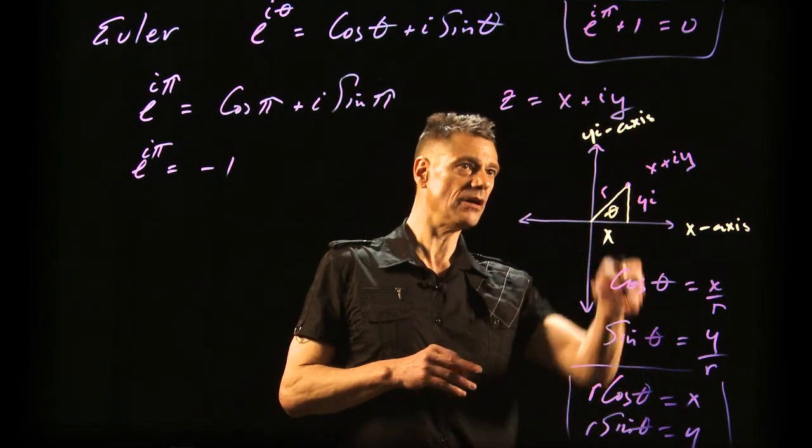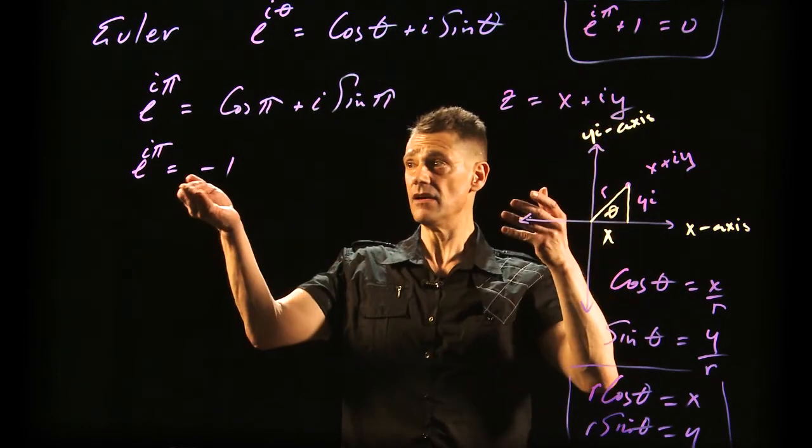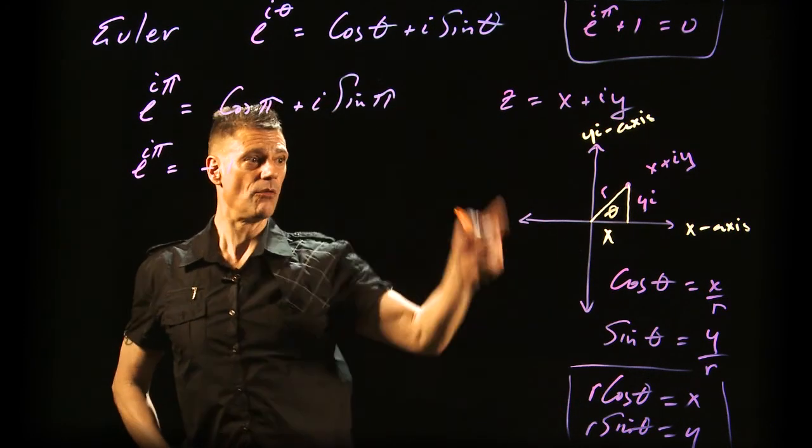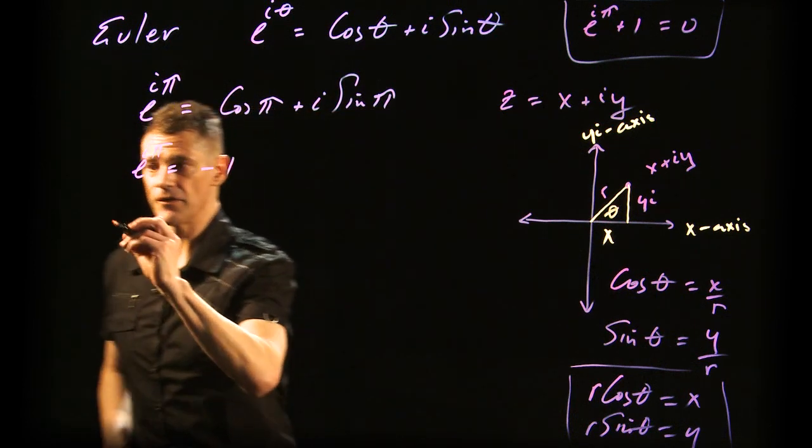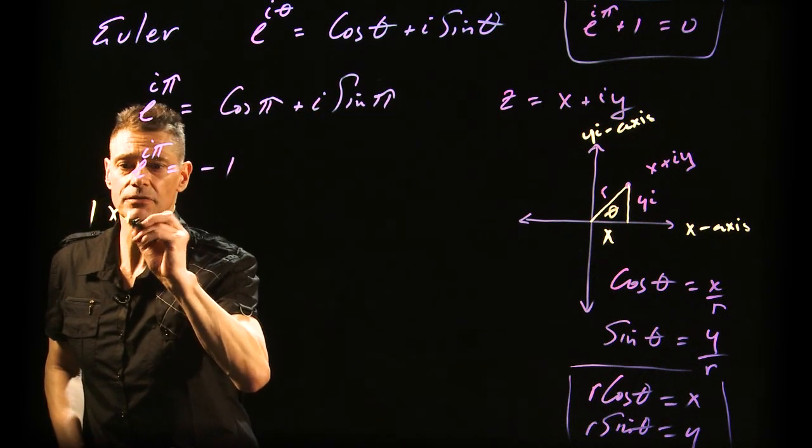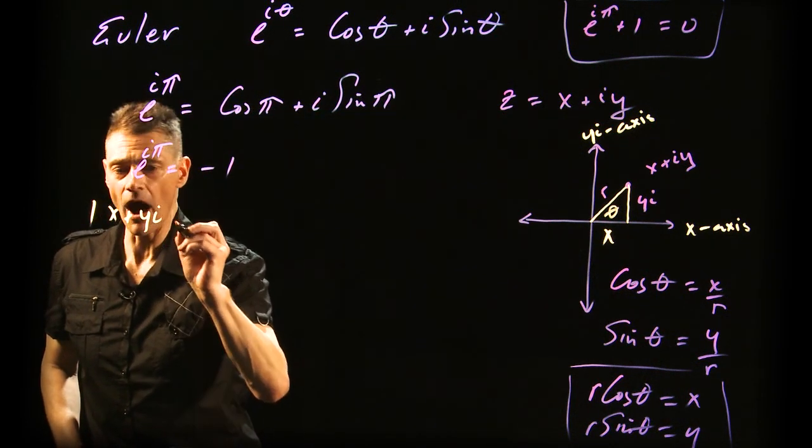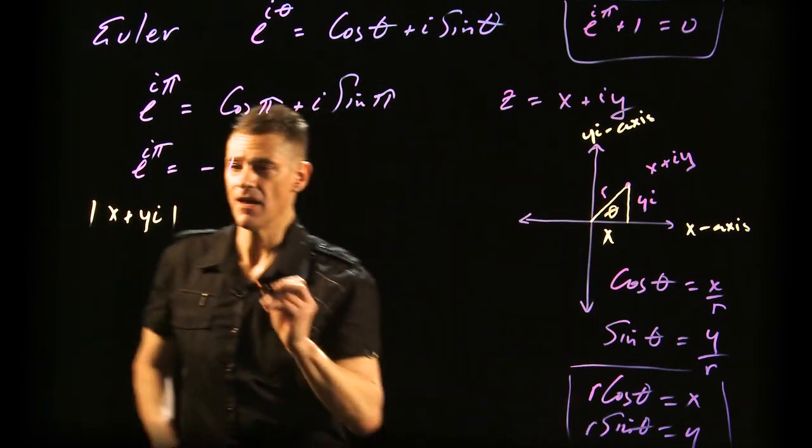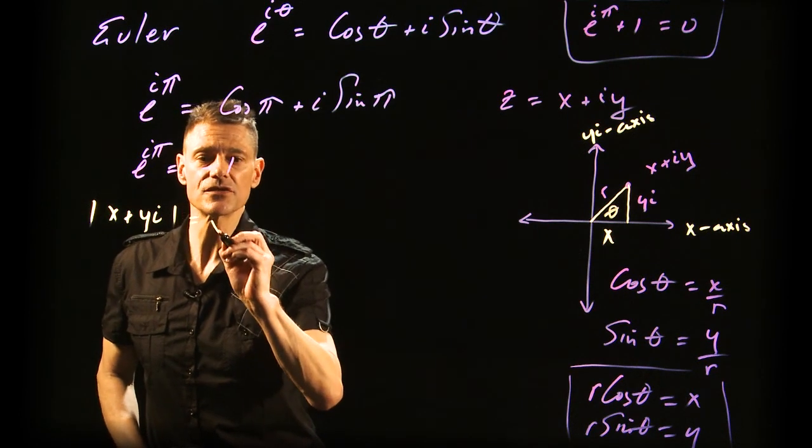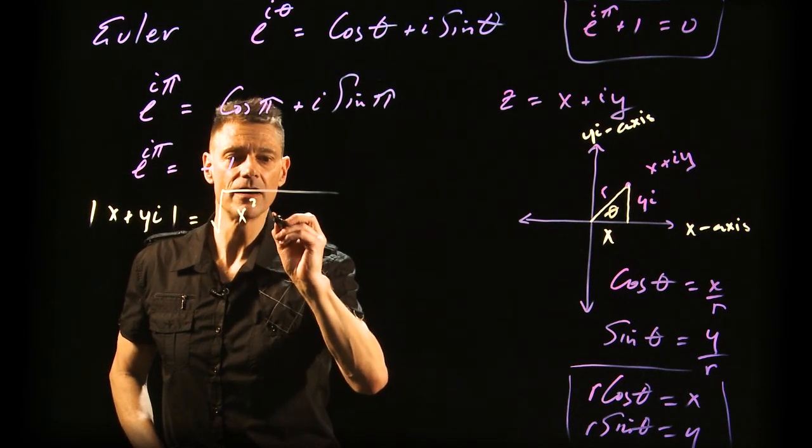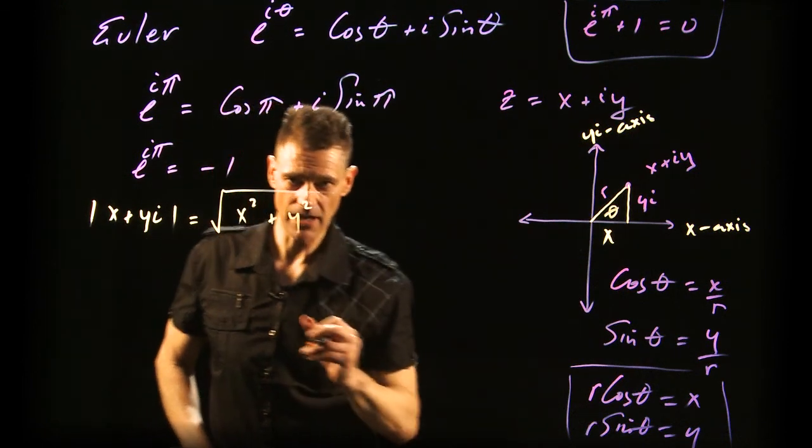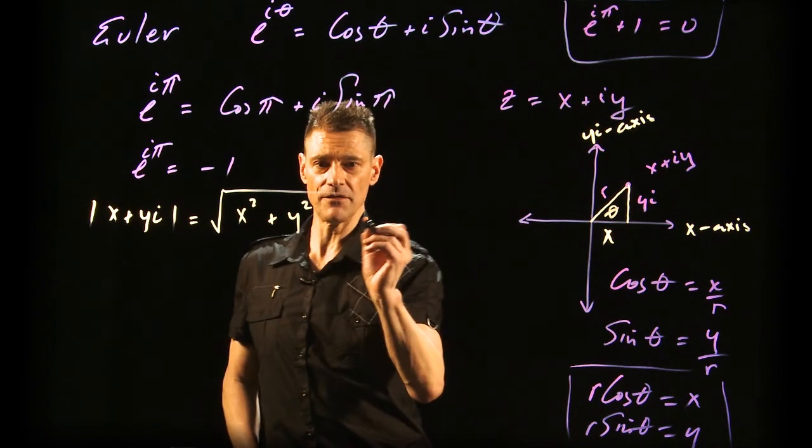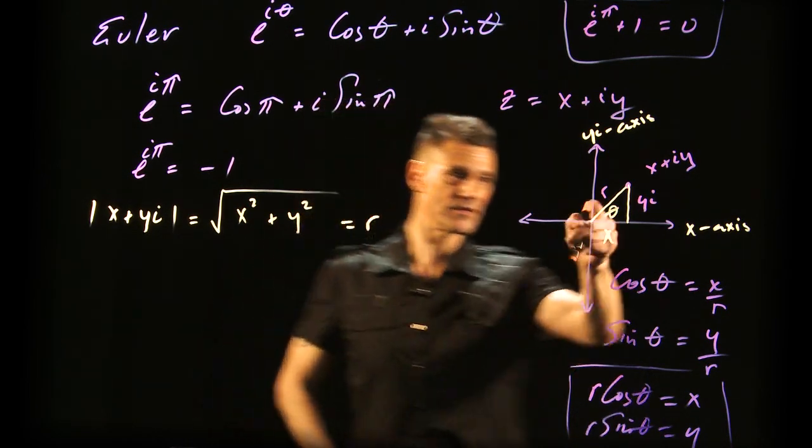How would you write z using this? First, what is this length? It's the norm: ||x + yi|| = √(x² + y²). I showed you why last time. It's the modulus of this. And this is r.